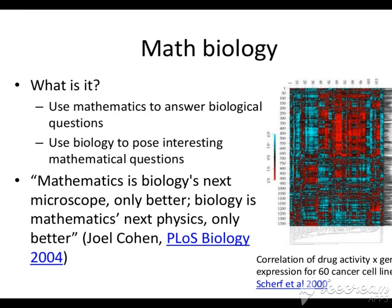First, we will learn the topic of mathematics — which way to explain a scientific process or to prove a method is the central method. What is Math Biology? It uses mathematics to answer biological questions; different biological questions are proven using mathematics. It also uses biology to pose interesting mathematical questions. As the quote says: mathematics is biology's next microscope, only better. Biology is mathematics's next physics, only better.